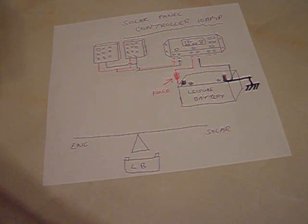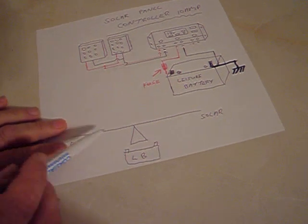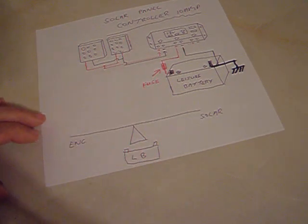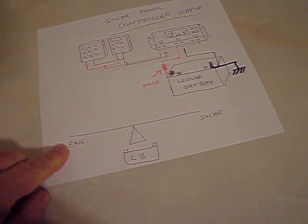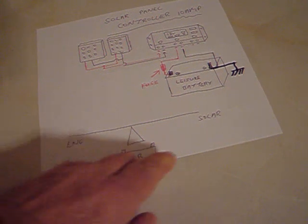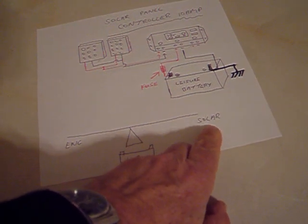Don't two chargers, the engine and the solar control system compete with one another? Very simply think of a seesaw. On one hand you've got the engine charging circuit and on the right hand side you've got the solar panel charger.